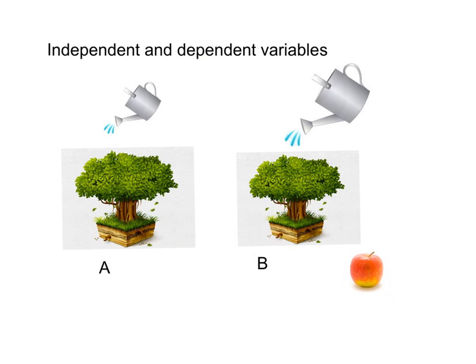So for our independent variable, the independent variable is the one that we are controlling. This is the one that's going to be compared to versus the control. So with this particular experiment, our independent variable would be the different type of water.